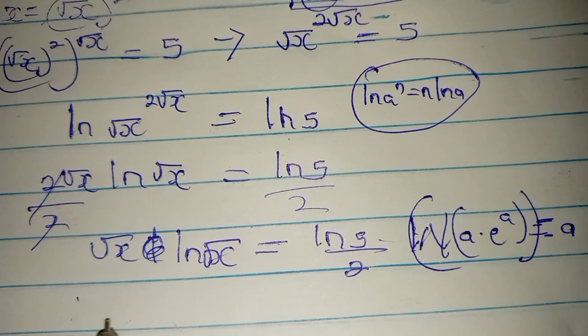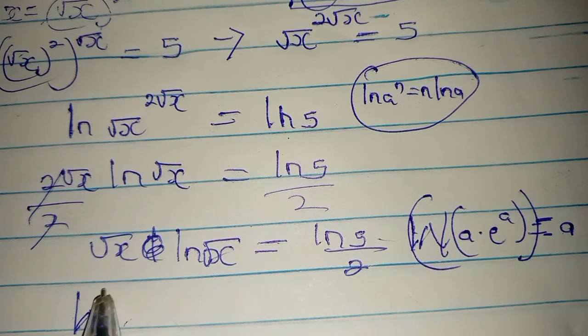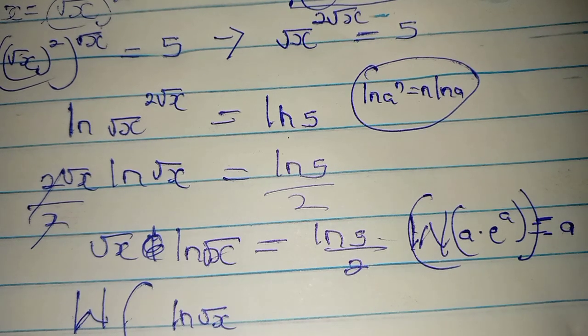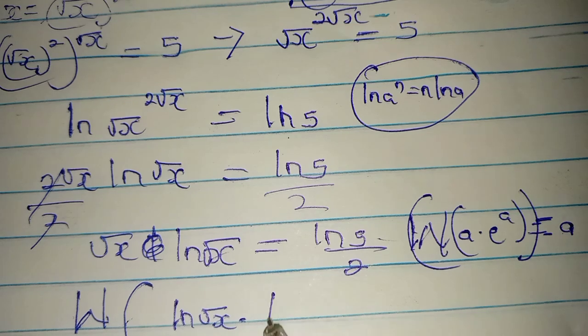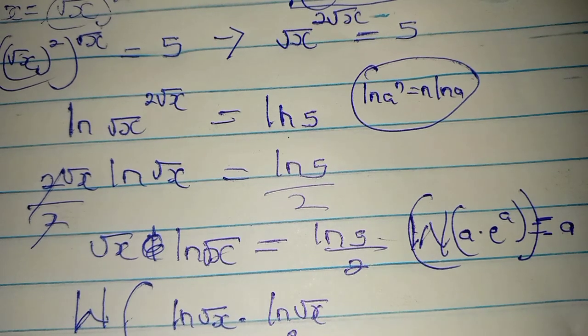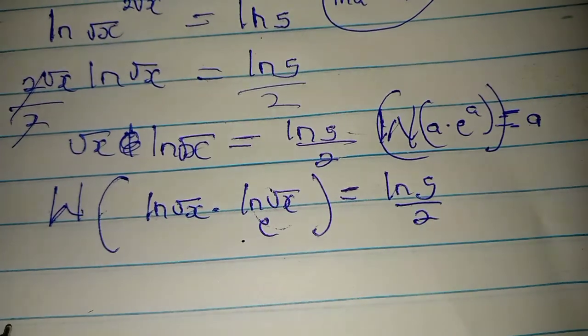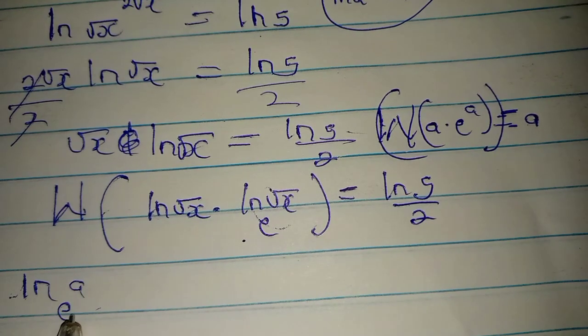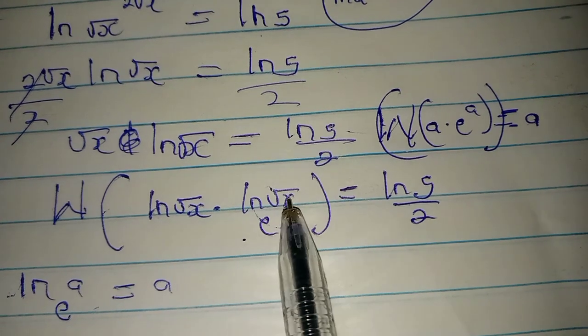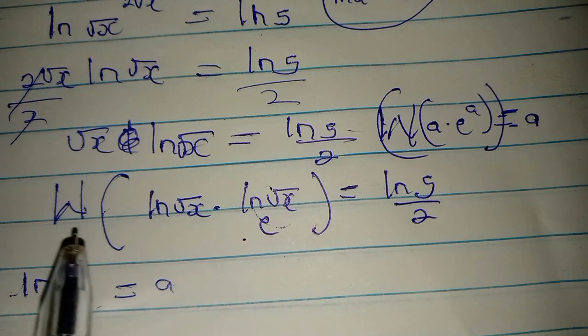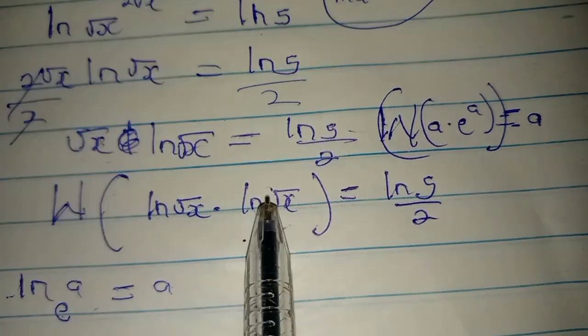So using this property, you can see that the W Lambert function of the natural log of √x times the natural log of √x as base e to the power of 2 equals the natural log of 5 over 2. So how do I do this? Don't forget, I use this property.